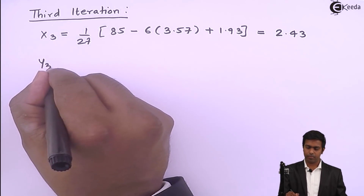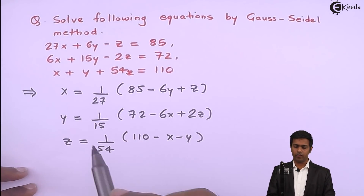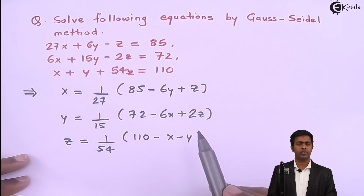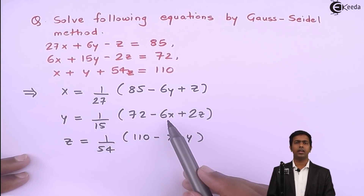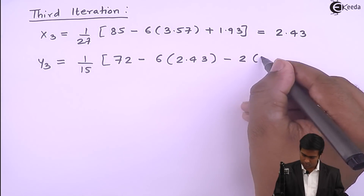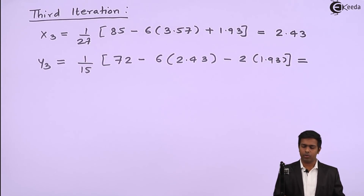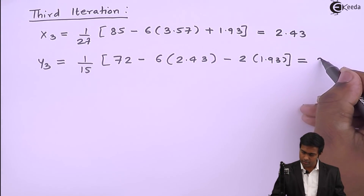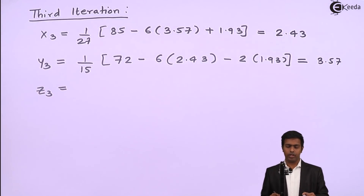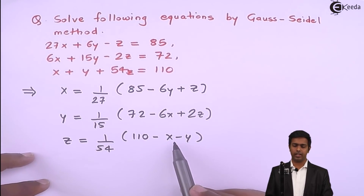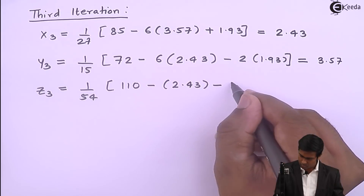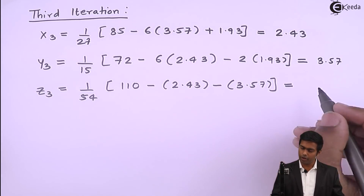In the third iteration, to find x₃ we use y₂ and z₂: x₃ = (1/27)(85 − 6y₂ + z₂) = 2.43. To find y₃ we use the latest x₃ and z₂: y₃ = (1/15)(72 − 6 × x₃ + 2 × z₂) = 3.57. To find z₃ we use the latest x₃ and y₃: z₃ = (1/54)(110 − x₃ − y₃) = 1.93.